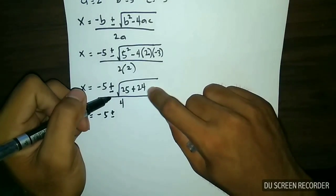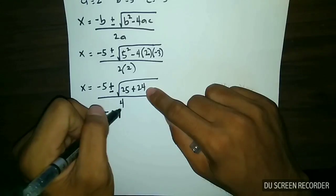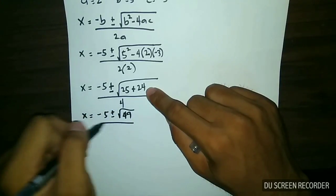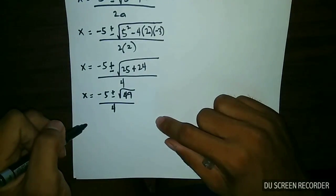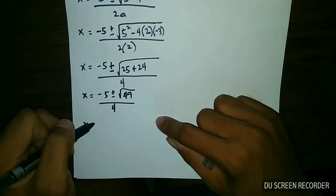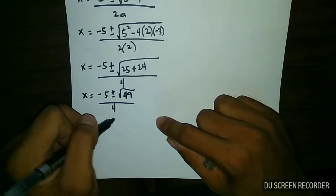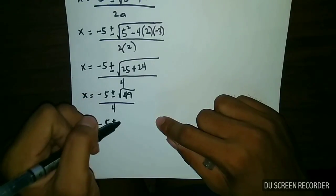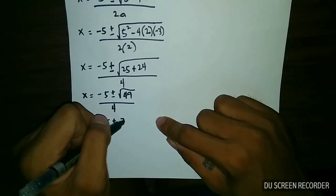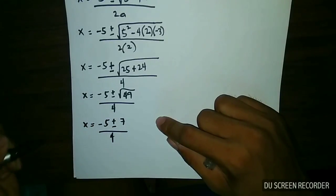The expression inside the radical simplifies to 49, all over 4. So the next step gives us negative 5 plus or minus 7, since the square root of 49 is equal to 7, all over 4.